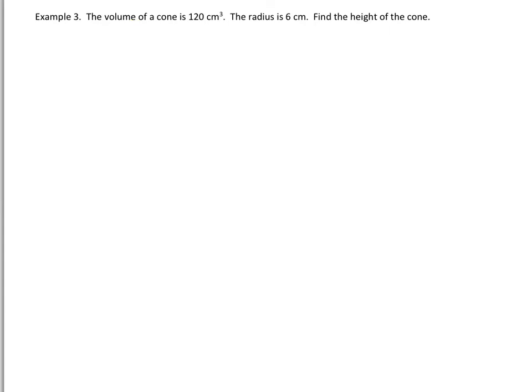All right, and for our third type of example, we're going to look at a question where we are actually given the volume, and we're also told that the radius is 6 centimeters, and instead it's asking us to find the height of the cone. And this is actually going to help us apply our algebra skills as well that we've been building up this whole year. So of course we need to start with the volume of a cone formula. So we know that volume equals pi r squared h, all divided by 3.